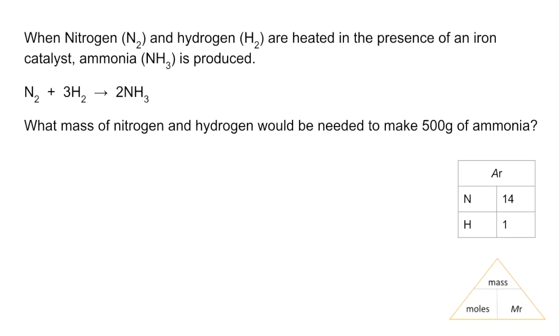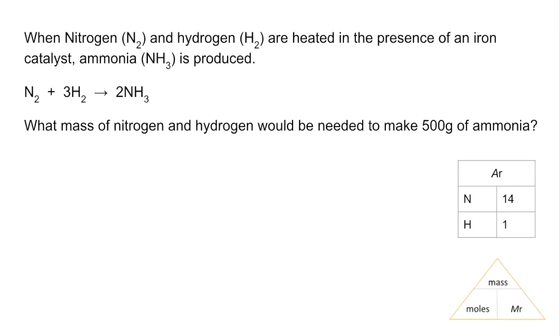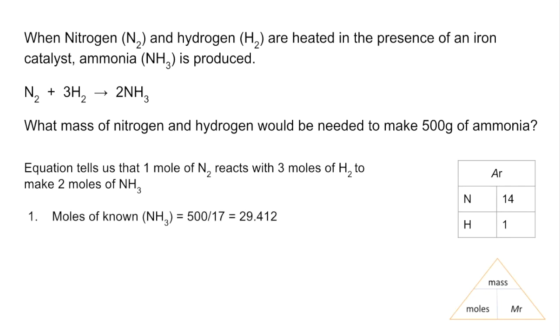Equation's telling us that one mole of nitrogen reacts with three moles of hydrogen to make two moles of ammonia. So the first thing we're going to do is establish the known chemical - ammonia - calculate its moles. So that's 500 mass divided by Mr, so 29.412 moles of ammonia. That's how much ammonia we're going to make.